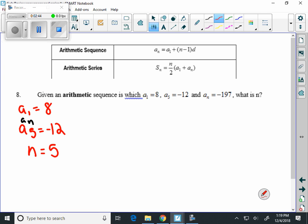When we use our first formula here, filling it in. Negative 12, there's our a sub n, equals a sub 1, there's the 8, plus n, 5 minus 1, times d.